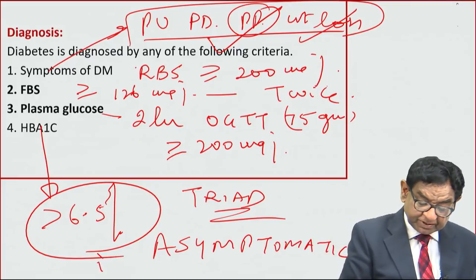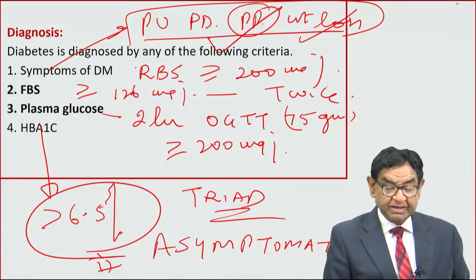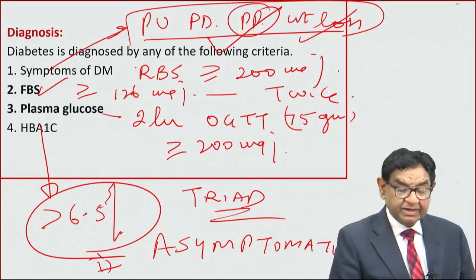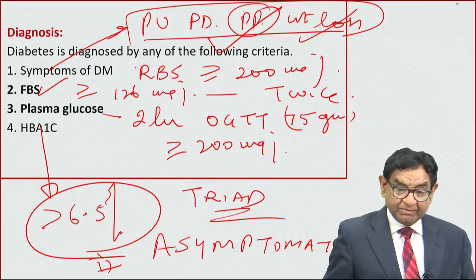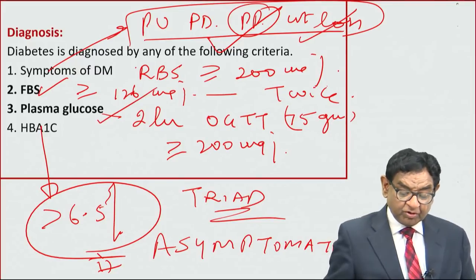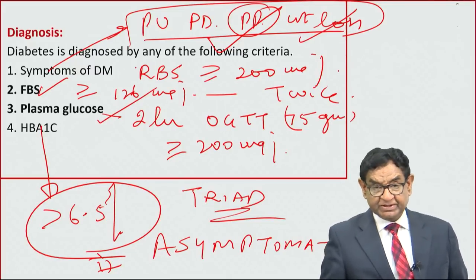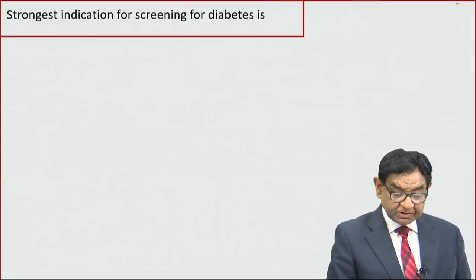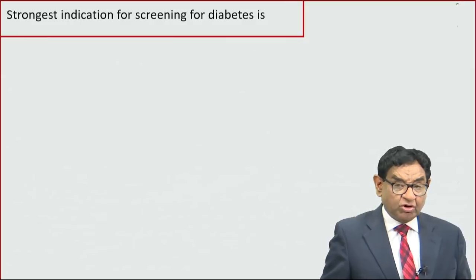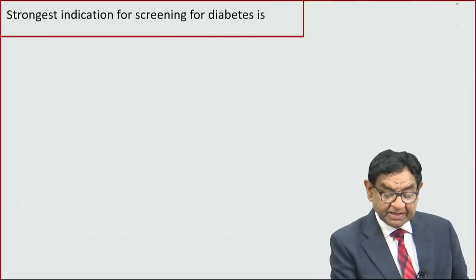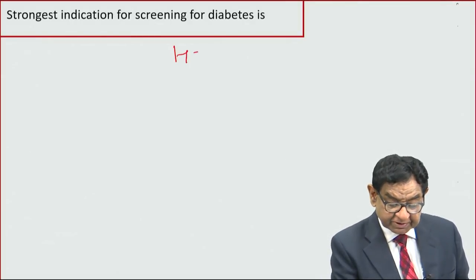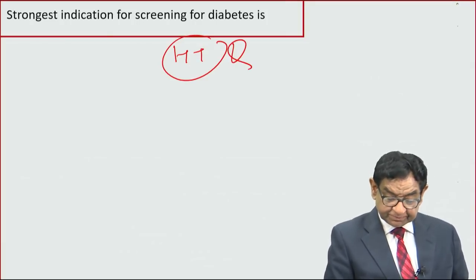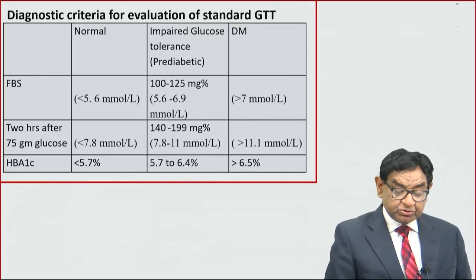One more thing before proceeding: most of the time, especially type 2 diabetic patients, may be totally asymptomatic — no symptoms at all. In that case, you go for fasting blood sugar, random sugar, glucose tolerance test, or HbA1c more than 6.5% to help in diagnosis. Also, the strongest indication for diabetic screening is the presence of hypertension — a very frequently asked question.